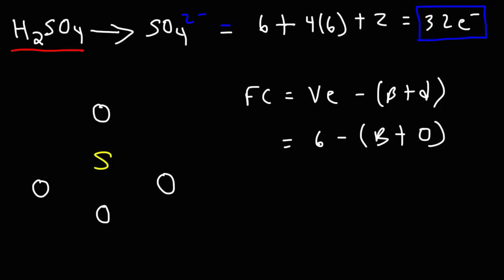If there's no lone pairs, the number of electron dots on sulfur is zero. We want the formal charge to be zero, so therefore, what should B be equal to? Well, we know that six minus six is zero, so we need six bonds. One, two, three, four, five, six.